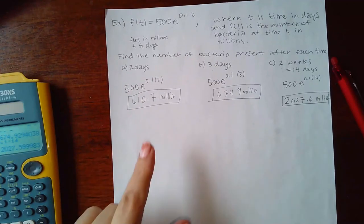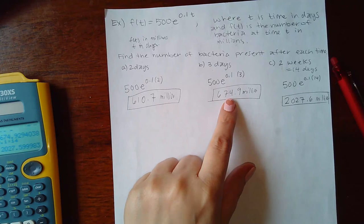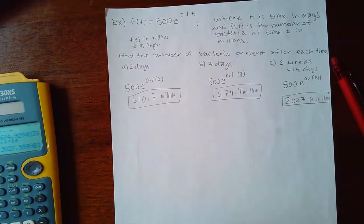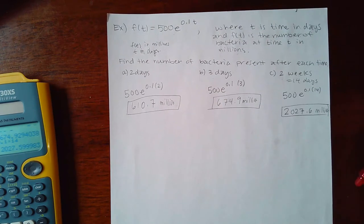Okay, so this is growing pretty fast, right? In one day it only had 610, the next day it had 674, and in two weeks now they're in the two thousands, right? So that just gives you an idea of how fast the bacteria can grow. But that's the end of the example, so now you should have enough information for you to go into my math lab and get those homework assignments knocked out.